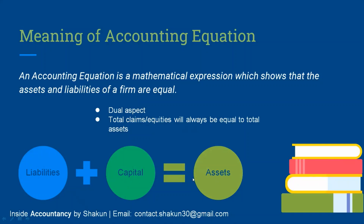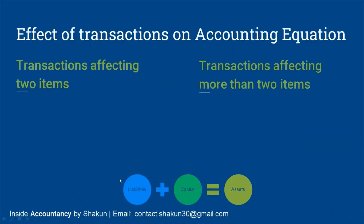Assets are always equal to the total of liabilities and capital. The effect of transactions on the accounting equation also needs to be studied. A transaction may either affect both sides of the equation by the same amount, or it may affect one side only — either by increasing or decreasing by equal amounts. Transactions can be divided into those affecting two items and those affecting more than two items.